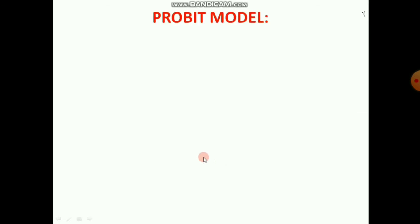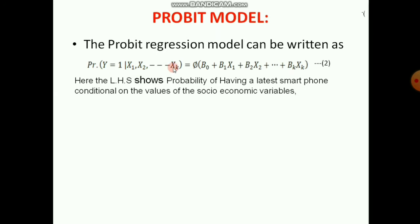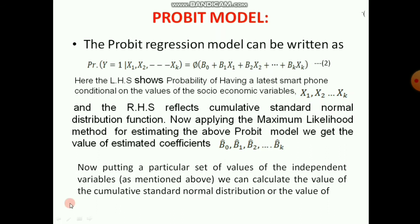Now let us come to the probit model. The probit regression model can be written as: P(y=1 | x1, ..., xk) equals the cumulative standard normal distribution function Φ(b0 + b1*x1 + ... + bk*xk). By applying the maximum likelihood method to estimate the probit model, we get the estimated coefficients beta_0, beta_1, beta_2, up to beta_k. Substituting a particular set of values — income 10,000, age, education — we can calculate the value of Φ.